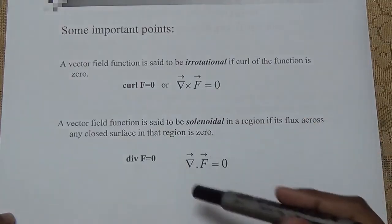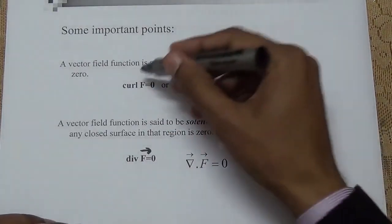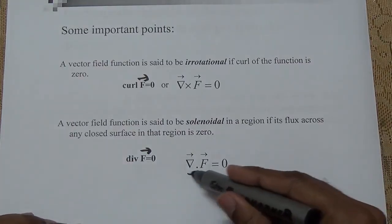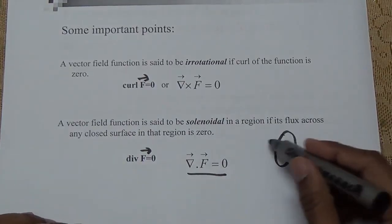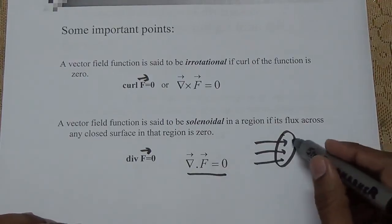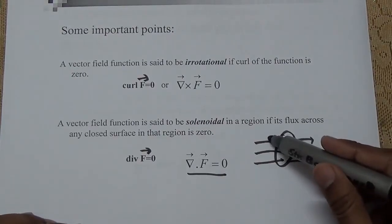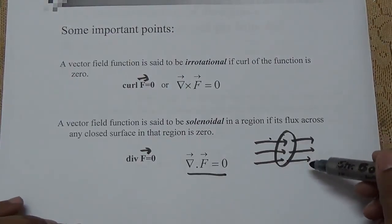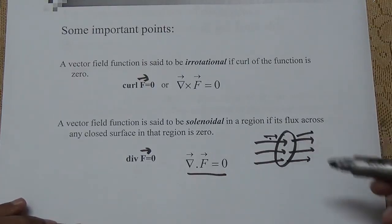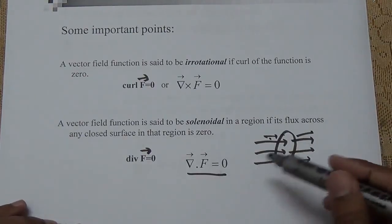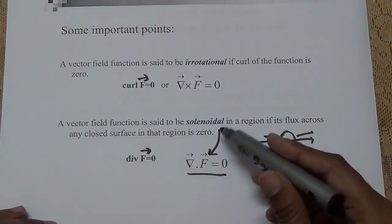When curl F is equal to zero the field is irrotational. And when divergence F equals zero — as we have seen, this happens when using an open surface where the flux entering through one face is equal to the amount coming out the other face, so divergence F equals zero — this field is known as solenoidal.